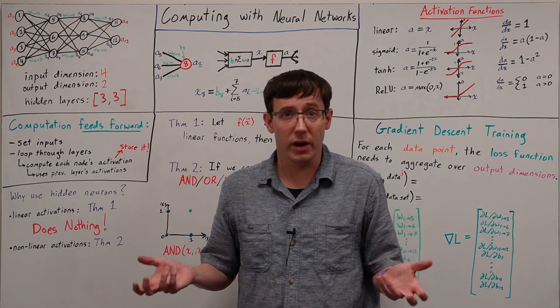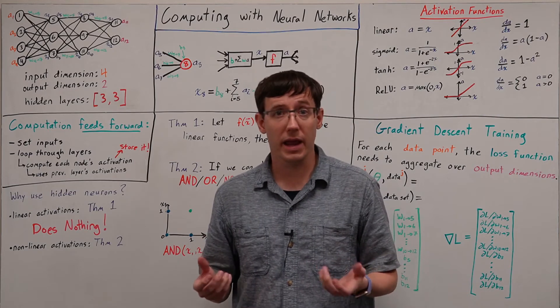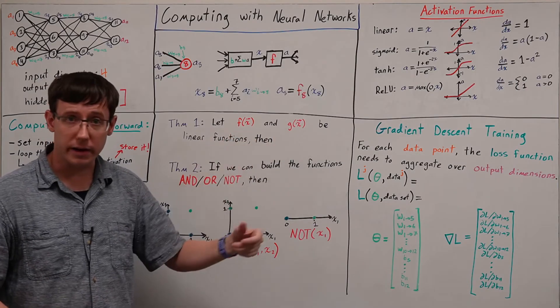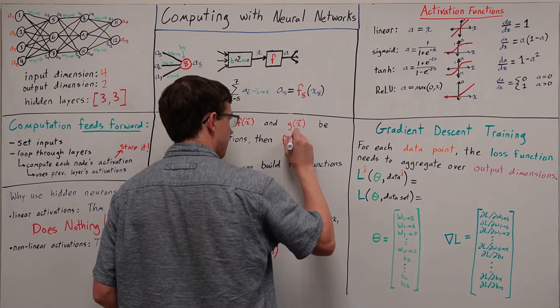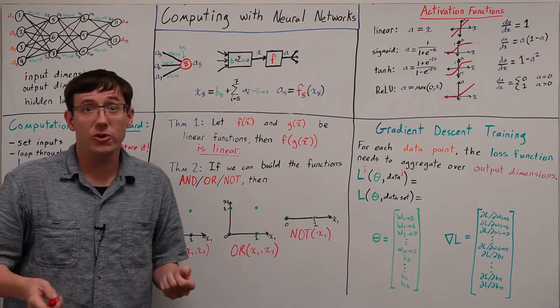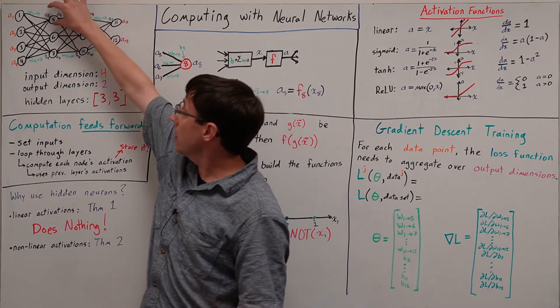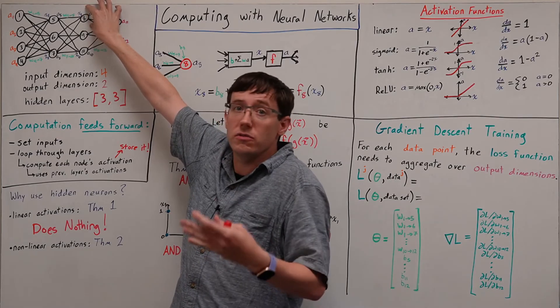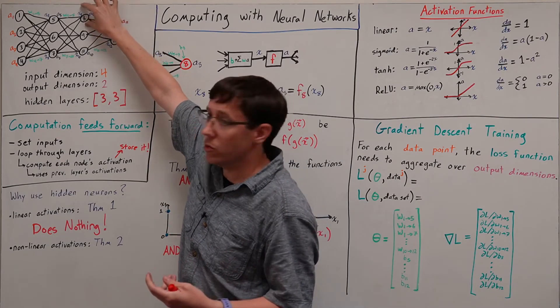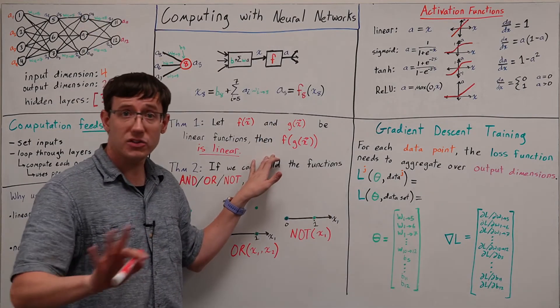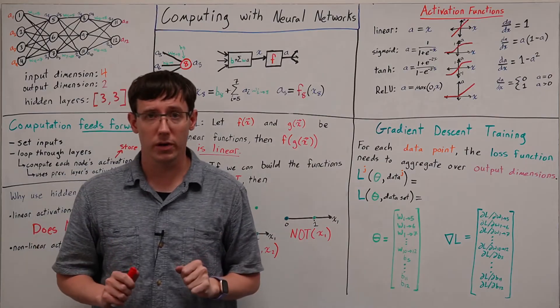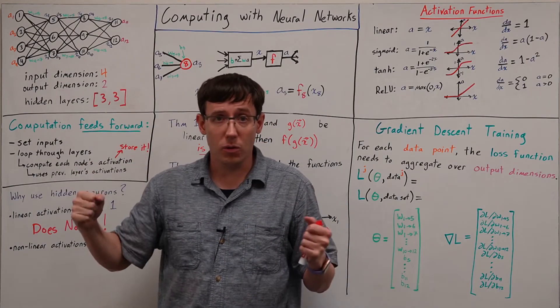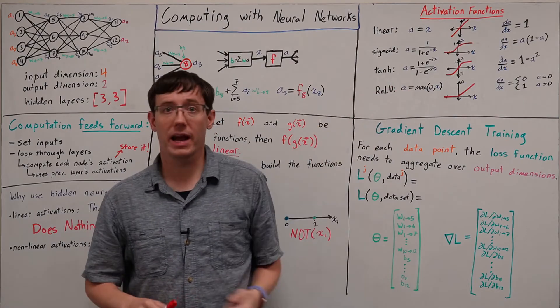And the reason that hidden layers don't help if we only use linear neurons comes from a theorem you may have seen in linear algebra. If we have two functions that are both linear and we compose those functions, the result is another linear function. And so if we compute some linear function with this neuron and then pass it through some other linear function, we could have achieved the same thing by just using different weights on a single neuron. I have not stated this theorem particularly carefully, and I'm not going to prove it. But the consequence is that if we want to get any value out of multilayer networks, we need to use some nonlinear activation function.